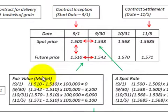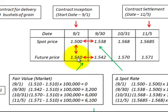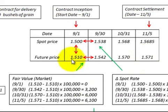To determine the fair value or market value of this contract, we start with our futures price at the start date of 9-1 and compare that to each period. For the 9-30 period, we compare it to 9-1 and multiply by the quantity under contract — the fair value comes out to $3,200. For the 10-31 period, comparing back to 9-1, the fair value works out to $6,000. And for the settlement date of 11-5, comparing to the 9-1 futures price, we get a $6,100 fair value of the contract.